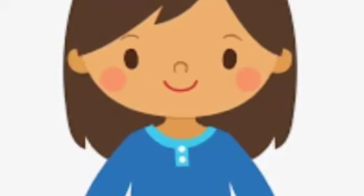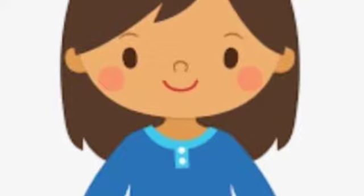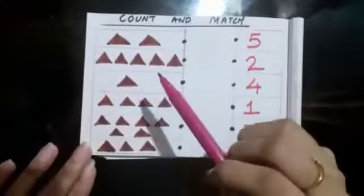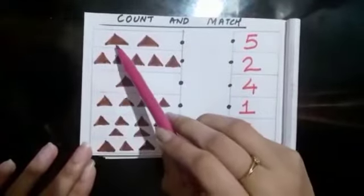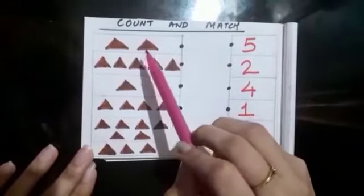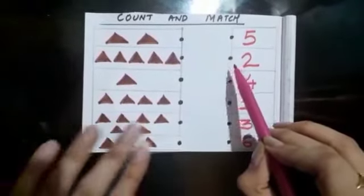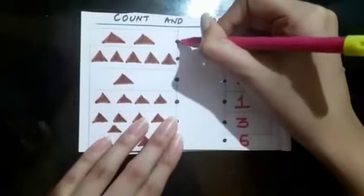Now children, we will count how many triangles are there and match accordingly. How many triangles are there? 1, 2. Where is 2? Here it is. Let's match.